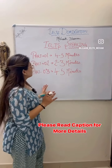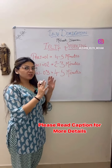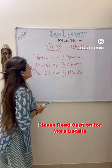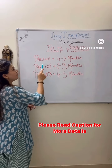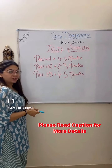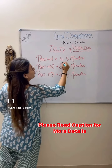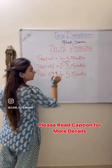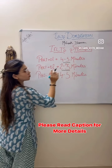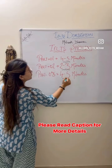In today's reel, we're going to discuss the basic structure of your IELTS speaking module. There are three parts: part 1, part 2, and part 3. Part 1 will be around 4 to 5 minutes, part 2 will be around 2 to 3 minutes, and part 3 will be around 4 to 5 minutes.